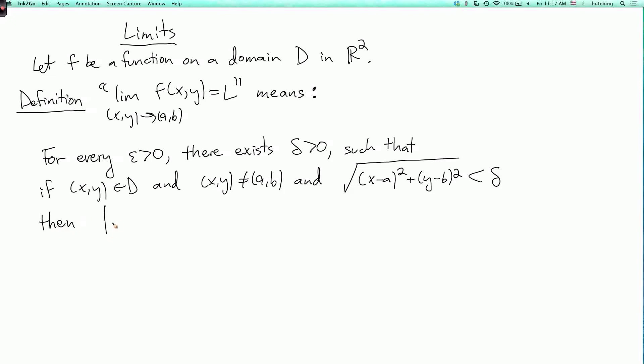Then, the absolute value of f(x,y) - L, that is the distance from the number f(x,y) to the number L, is guaranteed to be less than ε.